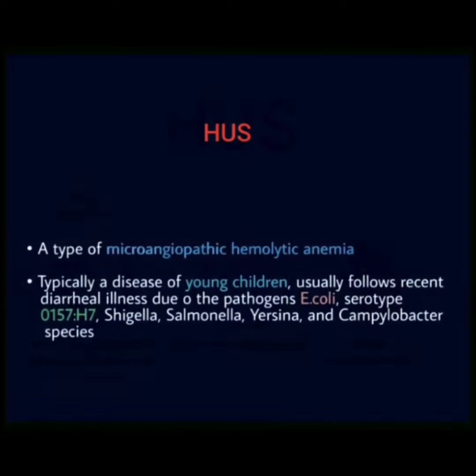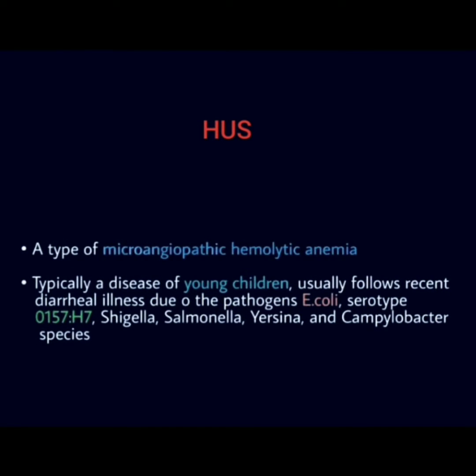Hemolytic Uremic Syndrome is a type of microangiopathic hemolytic anemia. It is typically a disease of young children and usually follows a recent diarrheal illness due to pathogens such as E. coli serotype O157:H7 and Shigella.